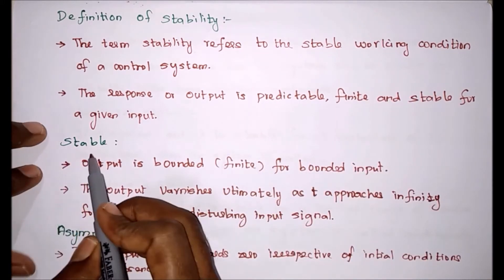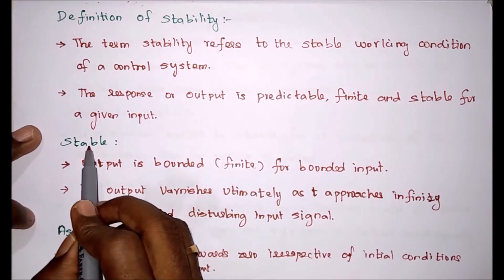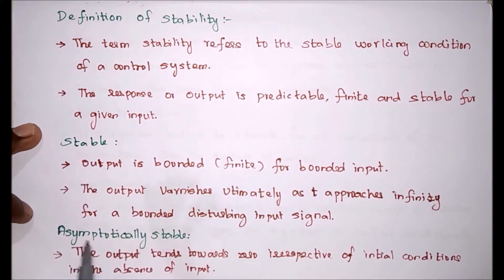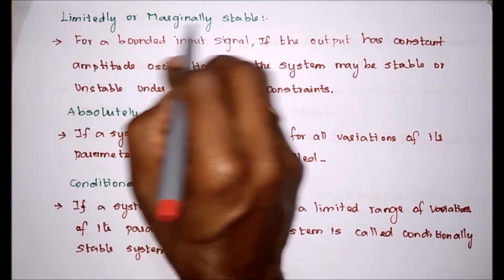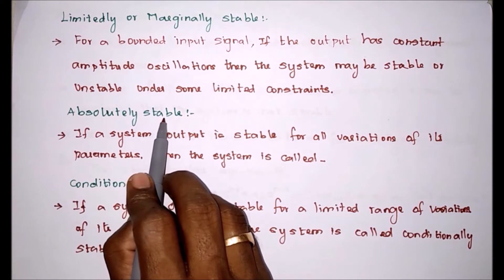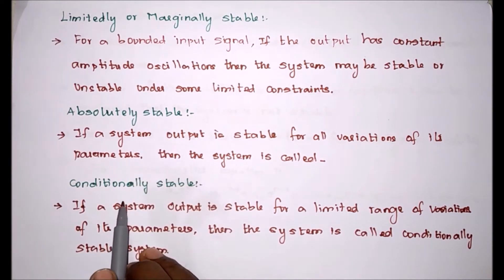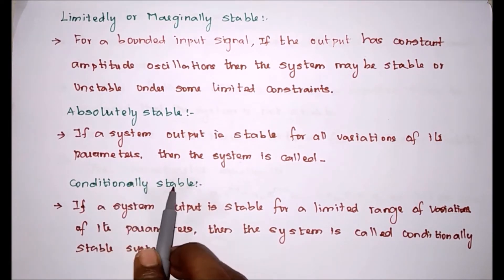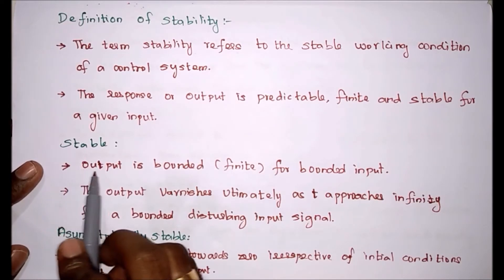There are five types of stability. One is stable, another one is asymptotically stable, then limitedly or marginally stable, then absolutely stable, and the last one is conditionally stable.